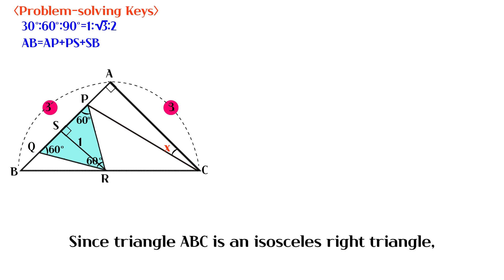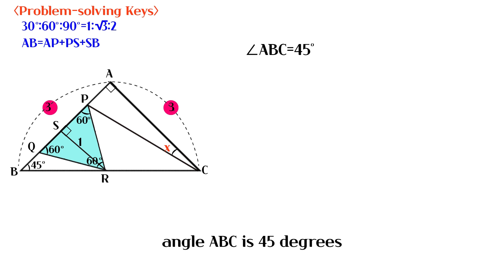Since triangle ABC is an isosceles right triangle, angle ABC is 45 degrees.